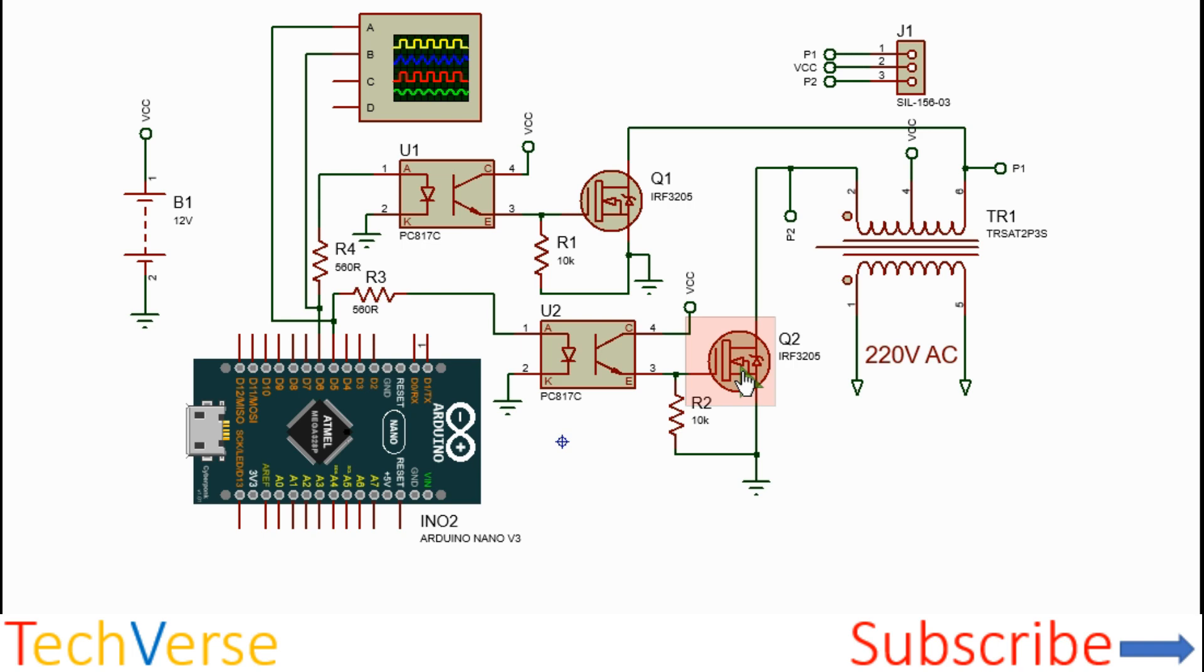This will allow current to flow from VCC through the center tap of the transformer, through the first half winding, through Q2 into ground.